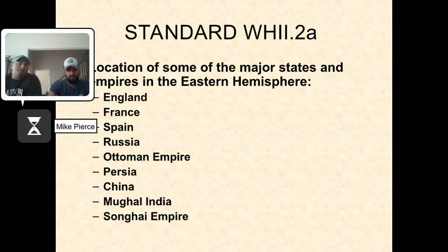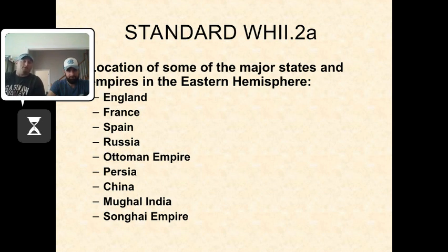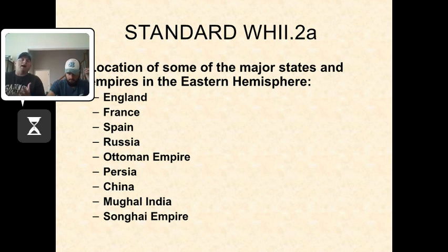For most of you that studied World History 1, this is just going to be a review. We're going to study the major states happening in the Eastern Hemisphere during this time period. We covered almost all of these in World History 1. Most of you should know where England is — that's where we talked about King John and the Magna Carta, Henry II and common law. We talked about France. France had a war with England a hundred years ago. Spain during this time period is going to be one of the most wealthy nations in the 1500s because of Charles V, who had all the goods he was taking from the Americas — gold and natural resources — enabling him to build the Spanish Armada and buy the best weapons.